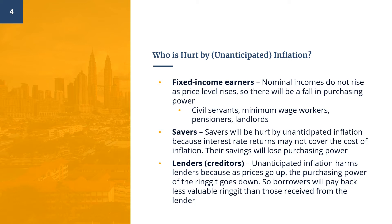The third group is lenders or creditors. Unanticipated inflation harms lenders because as prices go up, the purchasing power of the ringgit goes down, so borrowers will pay back less valuable ringgit than those received from the lender. For instance, Bank A lends Ali 1,000 ringgit to be repaid in two years. If in that time the price level doubles, the 1,000 ringgit that Ali repays will possess only half the purchasing power of the 1,000 ringgit he borrowed. The owners of Bank A will suffer a loss of real income.